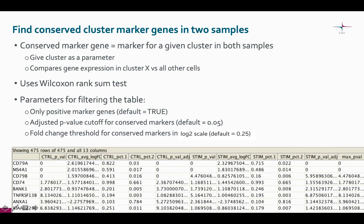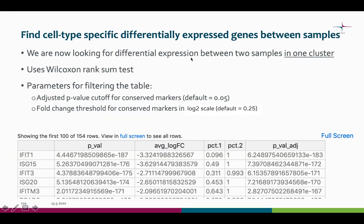The fold change needs to be higher than 0.25. The same tool also gives you the differentially expressed genes between the samples in a cluster of your choice. This tool gives results for one cluster at a time and you can give the cluster number as a parameter. The test here is very similar to the one for conserved markers, and you get a filtered table as a result.